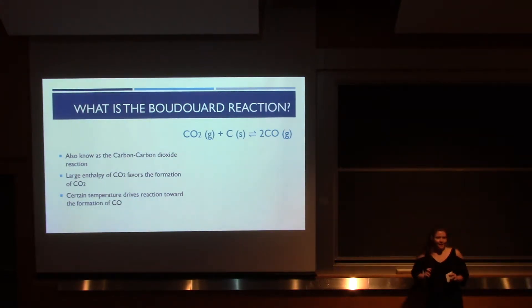So what is the Boudouard reaction? It's also commonly known as the carbon carbon dioxide reaction, and as the name suggests, carbon dioxide reacts with carbon to create carbon monoxide. The reason we want to create carbon monoxide is because it can be used to create syngas, which then is easily formed into other useful fuels. The issue with this reaction alone is that carbon dioxide has a very high enthalpy, and what this means is that the reaction itself favors the formation of carbon dioxide. So carbon monoxide doesn't start to be formed until a high temperature has been reached, which is typically at about 700 degrees Celsius under normal thermal heating.